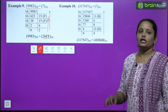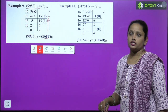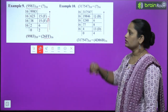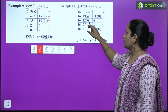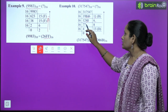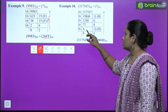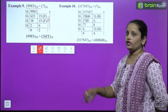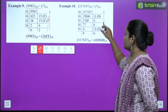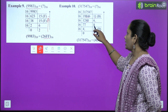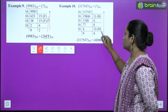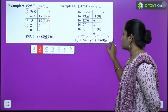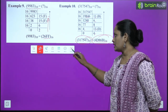So 26FF is the conversion of 9983 from decimal to hexadecimal. Another question: convert 317547 to hexadecimal. We divide by 16 repeatedly. Remainder 11 = B, remainder 6, remainder 8, remainder 13 = D, remainder 4. Writing in reverse order: 4D86B. So this is the conversion from decimal number system to hexadecimal number system.